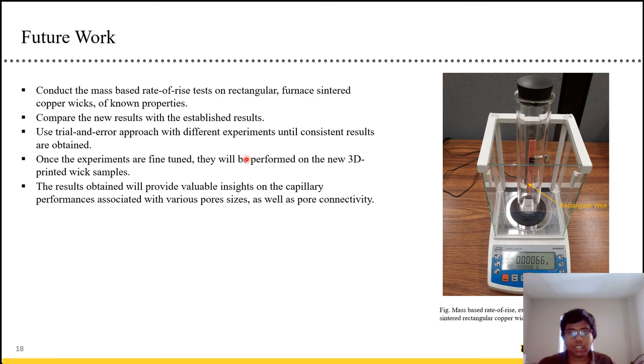Currently what we are trying to do or the future work that we are going to do is we are going to use rectangular copper sintered wicks. And these wicks have known properties that can be measured easily using optical rate of rise. So we are going to use the mass-based rate of rise on this rectangular wick structure. And we are going to do it over and over again using trial and error. And we will get a consistent way of measuring it, a consistent result. And once we get the consistent result, we will apply it on the 3D printed wick structure. This will provide us with valuable insights on the capillary performance associated with various pore sizes as well as pore connectivity.